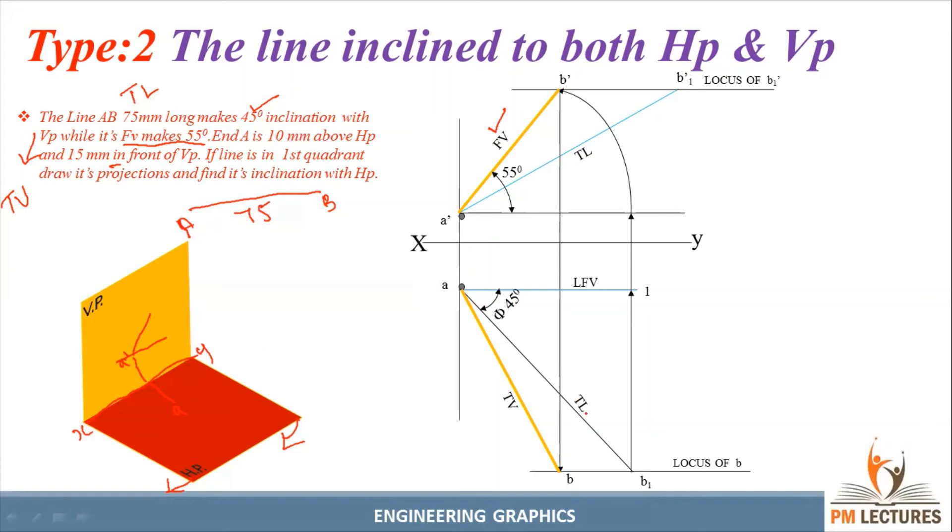Make an angle of 45° from the XY line. The true length is 75mm. Draw a vertical line, then extend to the front view line. Mark 55° from that point. Use the compass at 75mm to mark where it cuts the locus of B dash. Mark it as B1 dash. That's all, thank you.